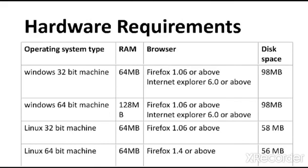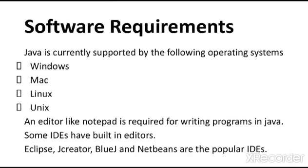If you are using a Windows 64-bit machine, then Java 6 requires 128 MB of RAM space and 98 MB of hard disk space, with the same web browser requirements as the Windows 32-bit machine. If you are using Linux operating system, the specification varies. For a Linux 32-bit machine, 64 MB of RAM and 58 MB of hard disk space is required with Firefox 1.06 or above. On a Linux 64-bit machine, 64 MB of RAM and 56 MB of hard disk space is required with the same web browser support.